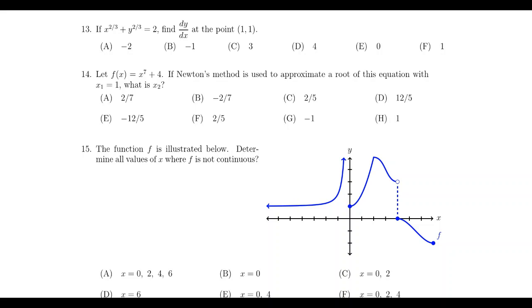Question number 13, still in the multiple choice section, will be a question about implicit differentiation, which admittedly showed up in exam three in the free response section. For purposes of structure of the exam, those questions have been reformatted to be multiple choice questions. Question number 13 might also ask you about logarithmic differentiation, which was a technique we learned about for exam three and showed up in the free response section, but has now been migrated to the multiple choice section.